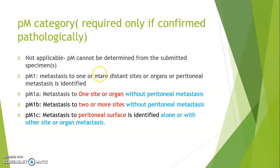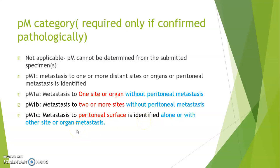PM category for colorectal: PM1 — metastasis to one or more distant sites or organs, or peritoneal metastasis identified. Divided into M1A (one site or organ involved without peritoneal metastasis), M1B (metastasis to two or more sites without peritoneal metastasis), and M1C (metastasis to peritoneal surface alone or with other site or organ metastasis). Thank you very much.